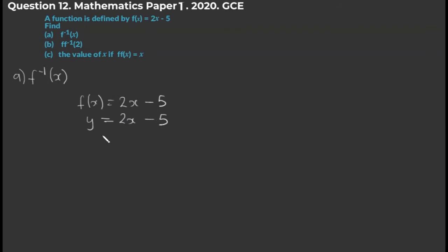Now what we're going to do is swap x and y. This is a very important step because we want to find the inverse. We swap like this and we have a new expression. The equation changes totally — where we had y we put x, and where we had x we put y. Now at this stage what we're going to do is make y the subject of the formula.